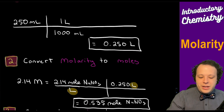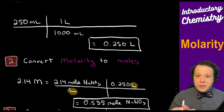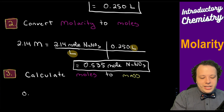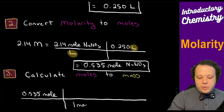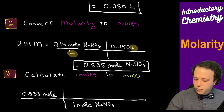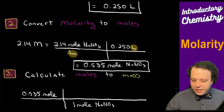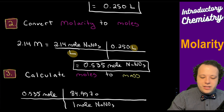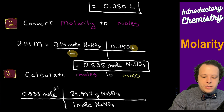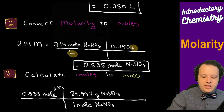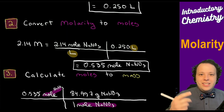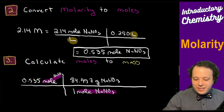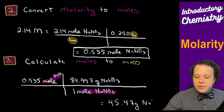That gives moles, but we need grams. Thinking back to stoichiometry, to go from moles to grams we use molar mass. The molar mass of sodium nitrate is 84.997 grams per mole. Moles of sodium nitrate cancel, leaving us mass. So you would need to add 45.47 grams of sodium nitrate to 250 milliliters of water to make this solution.